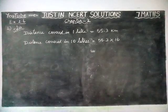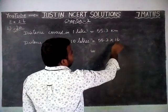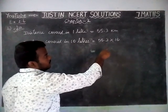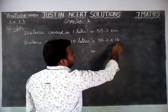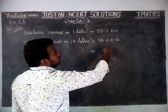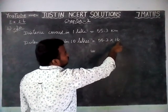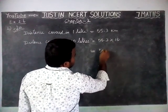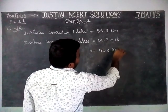Here we have one decimal number and another one that is a multiple of 10. We have to multiply this number. In the previous video I told you that when we are multiplying with multiples of 10, according to the number of zeros, we have to move the decimal point to the right-hand side one step. So here we have only one decimal part and only one zero, so we will take this decimal point to the right-hand side one step. The answer is 553.0 km.